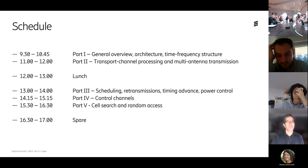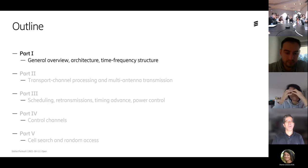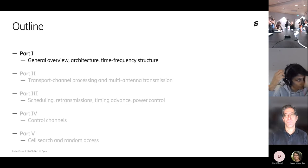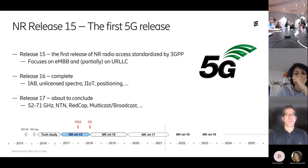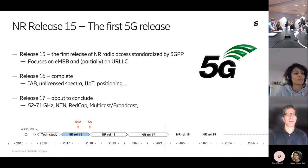Let's start with the first part — a general overview of NR architecture, time-frequency structure — to give you a high-level feeling of what it is. 3GPP is the standard-setting organization developing NR, and they have releases roughly every 18 months, going all the way back to 3G.